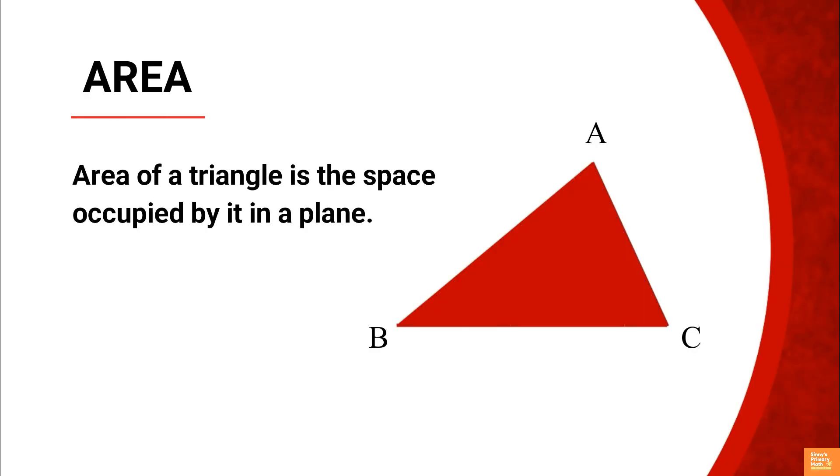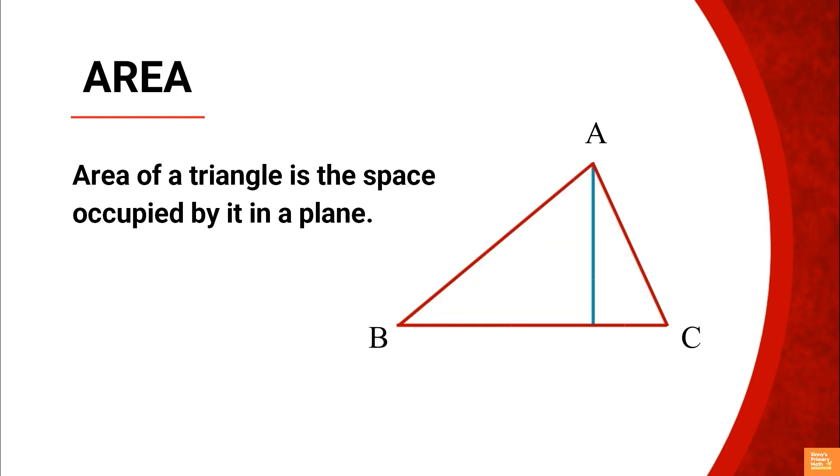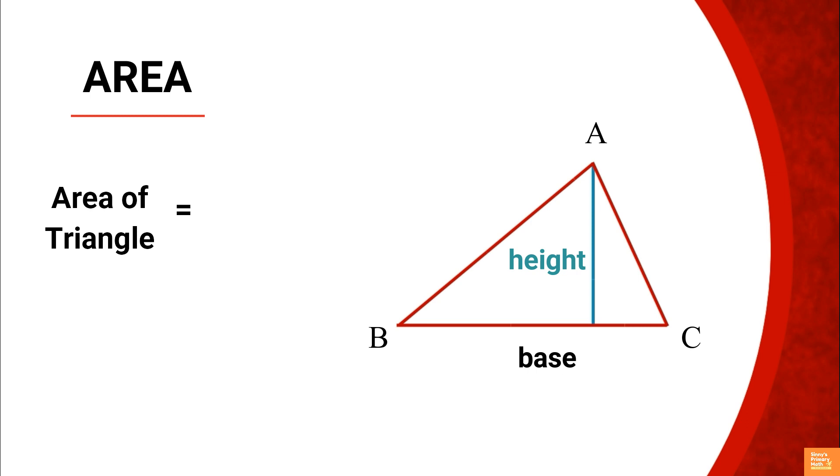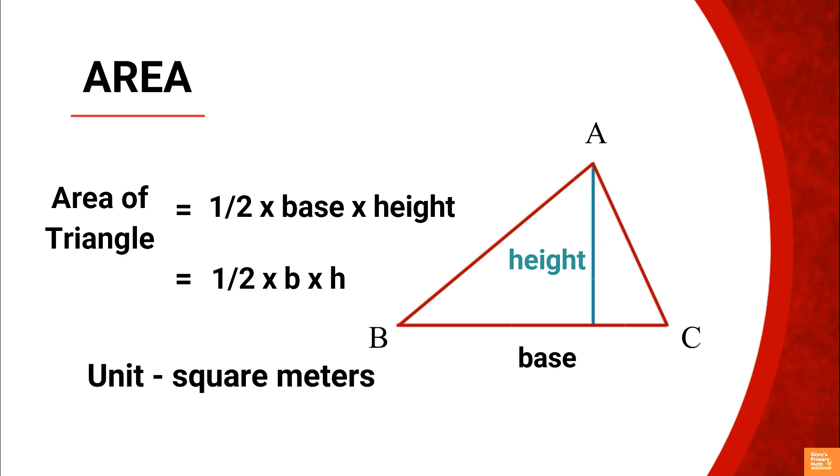Area: Area of a triangle is the space occupied by it in a plane. We can calculate the area if we know the base length and the height of a triangle. Area of triangle equals half base into height. It can also be written as area equals half B into H, where B is the base, not breadth, and H is the altitude. Area is measured in square units.